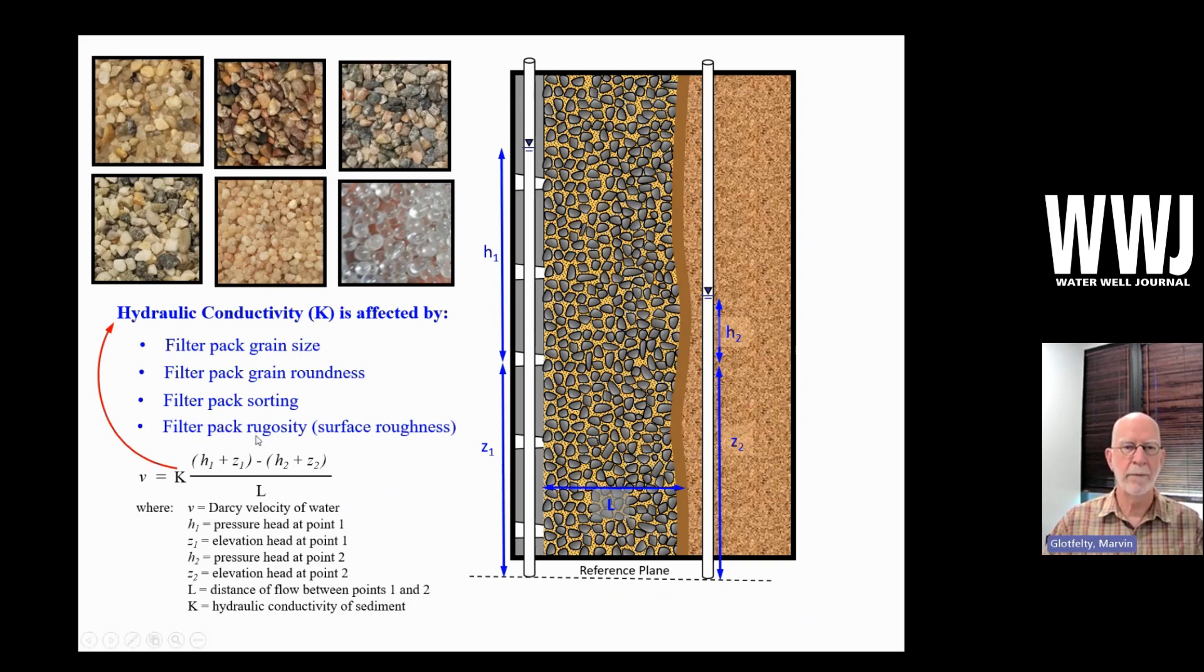And then by some probably minor amount, but there is some impact from the rugosity. That's to say how smooth is the surface. And this example here is manufactured glass beads. Those, of course, are very smooth compared to quarried material, which is all the others. But there is an impact there.